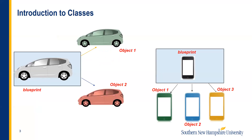Let's first try to understand what a class is and what objects are. In order to build something, it's useful to have a blueprint or a template. Using the blueprint of a house, we could build multiple houses. Similarly, using a design for a car or a cell phone, we could build many cars or cell phones. So we can create multiple objects from a blueprint or a template. In programming, we could do something similar — we could create a blueprint called a class and then make multiple objects or instances of the class.